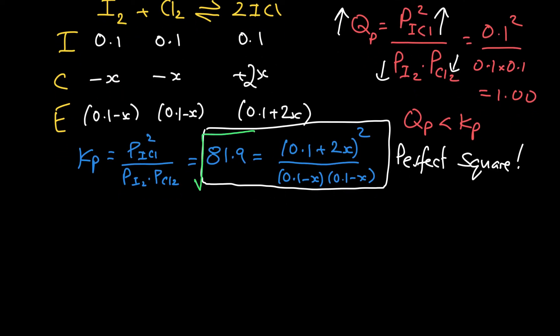So when I'm using my perfect square, I can square root each side, left and right. So the square root of 81.9 is something like 9.0499. But the right-hand side is equal to 0.1 plus 2X divided by 0.1 minus X. So notice the top was essentially the same thing squared, and the bottom is essentially the same thing times the same thing. So when we square root it, essentially we got (0.1 plus 2X) squared over (0.1 minus X) all squared, so we can just lop off the two squareds.